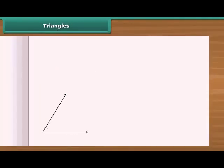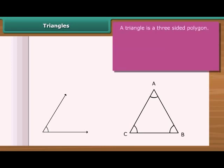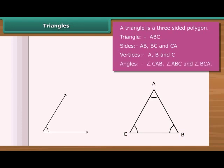An angle is not a closed figure. A closed figure with least number of sides is a triangle. A triangle has three sides, three vertices and three angles. In the given figure, ABC is a triangle. AB, BC and CA are three sides. A, B and C are three vertices. Three angles are angles CAB, ABC and BCA.